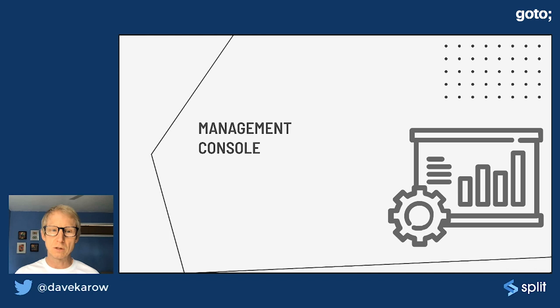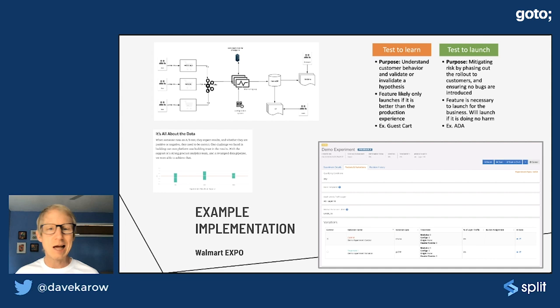Just want to quickly show you some examples. So Walmart has something called Expo and they have a fancy UI. So they can actually make sense of it without having to be in the database. They have practices they have like test to learn and test to launch. You can learn more about that in a blog post I put up recently on our site. And they have some pretty powerful data manipulation pipeline to get data quickly move from one place to another.